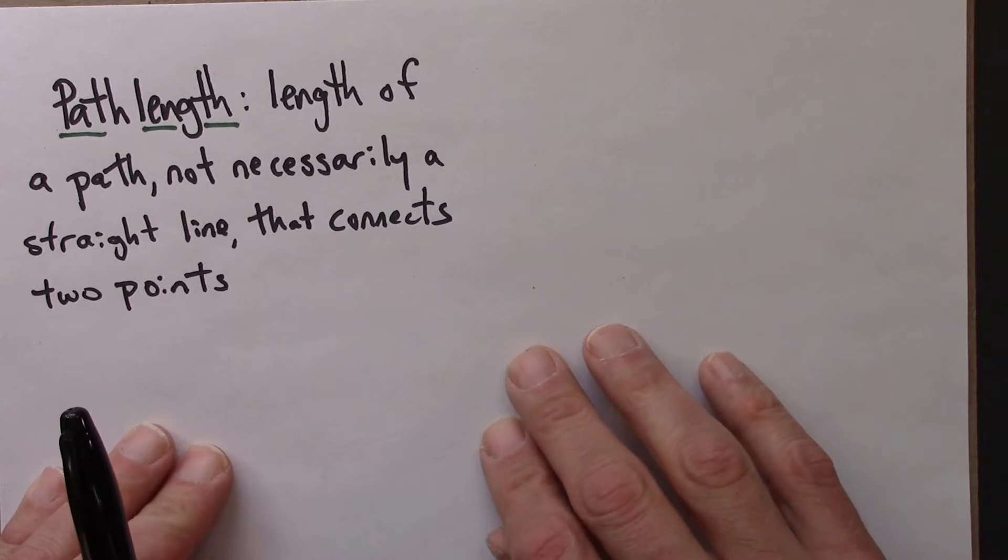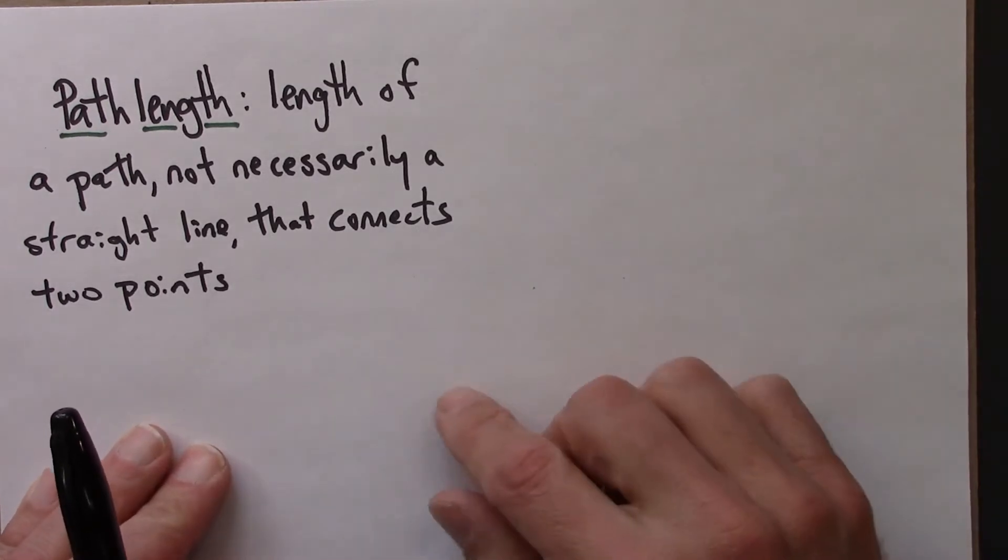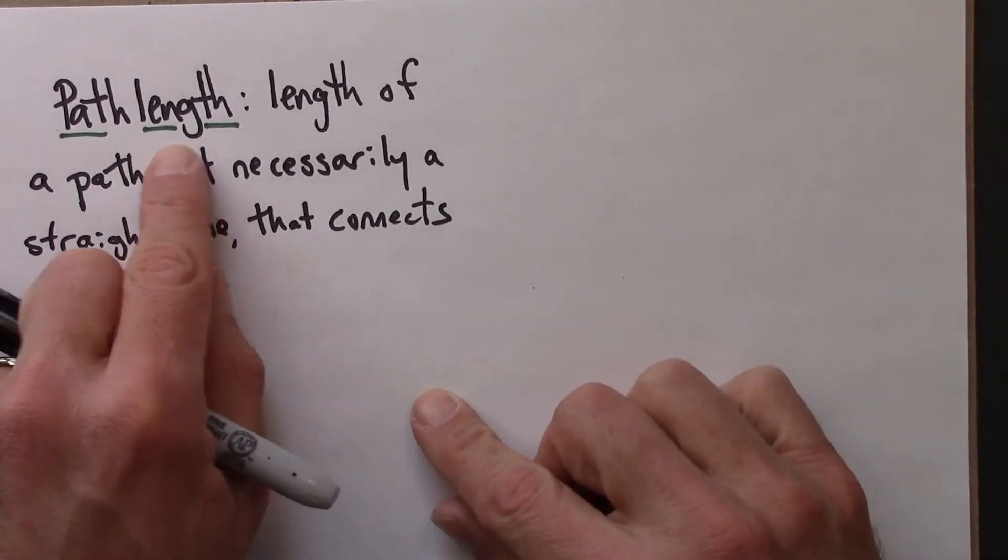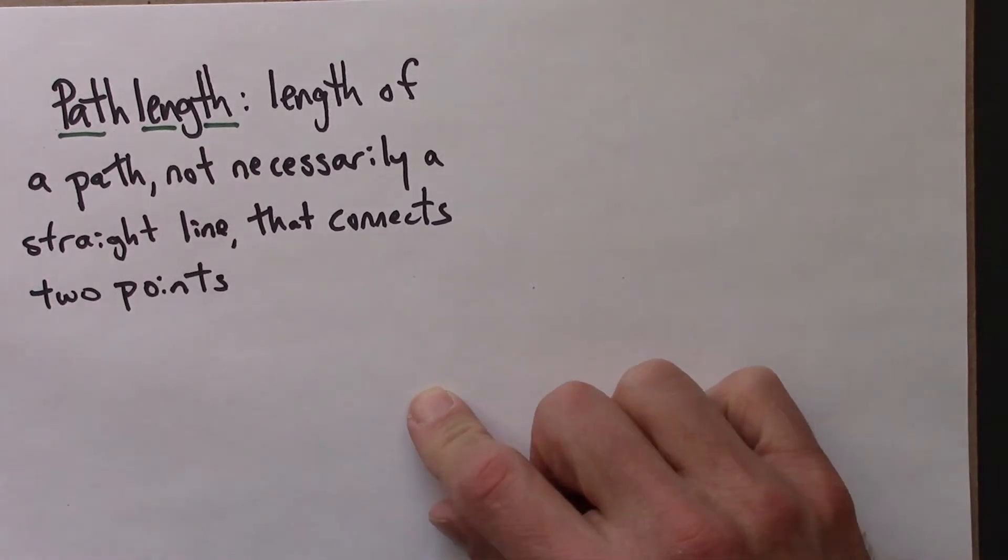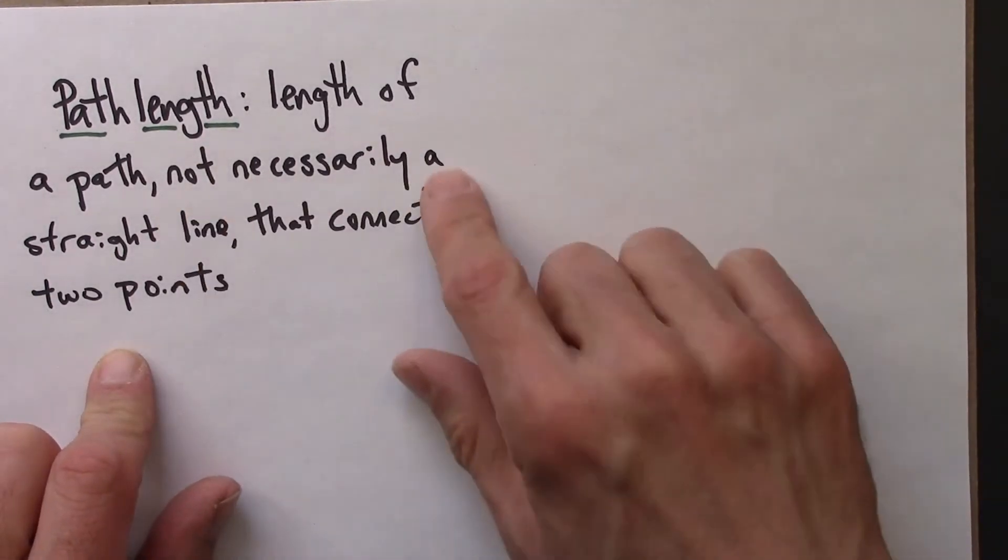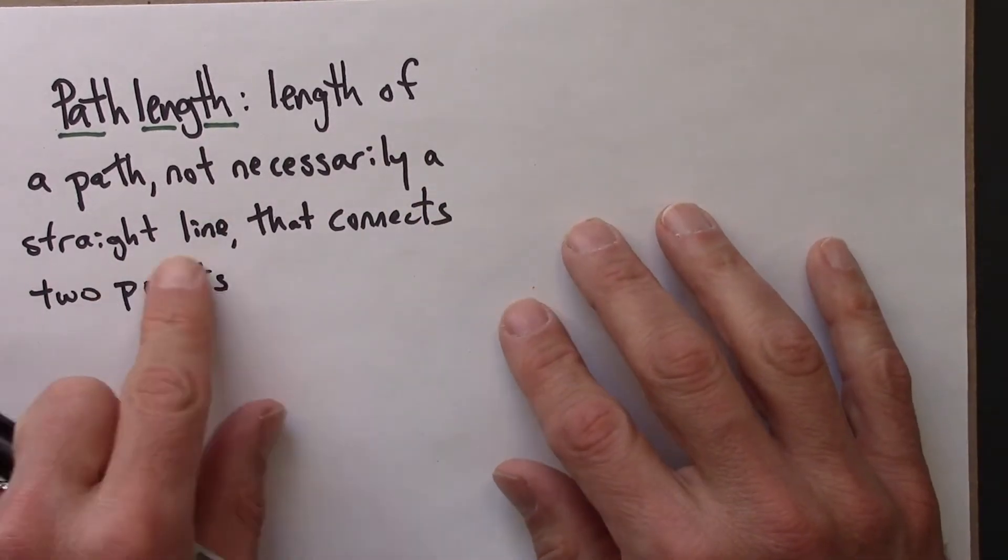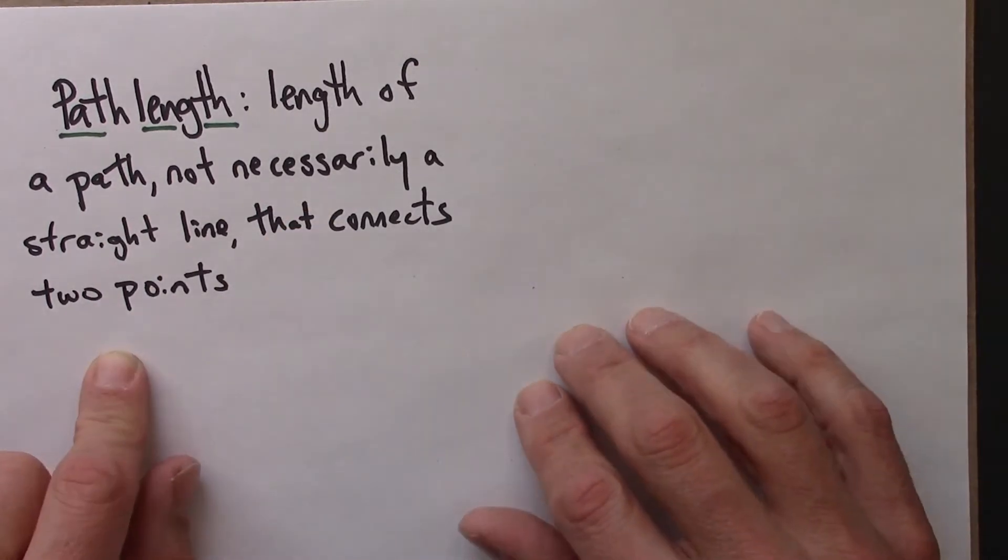There's one other way of measuring the spatial separation between two points and that was this idea of path length. And that is just the length of a path, not necessarily a straight line, but some other path that might connect two points on a map.